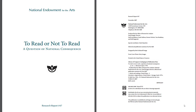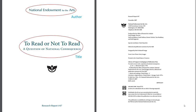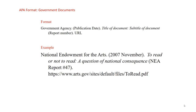To cite this source, you need to identify all the elements, such as the author, which is the agency responsible, the title, the publication number, and the publication date. Also, make sure you have the complete URL for the citation. It is important to remember that the parent type of source is a government document, so the citation guidelines are for government documents, whether print or online.